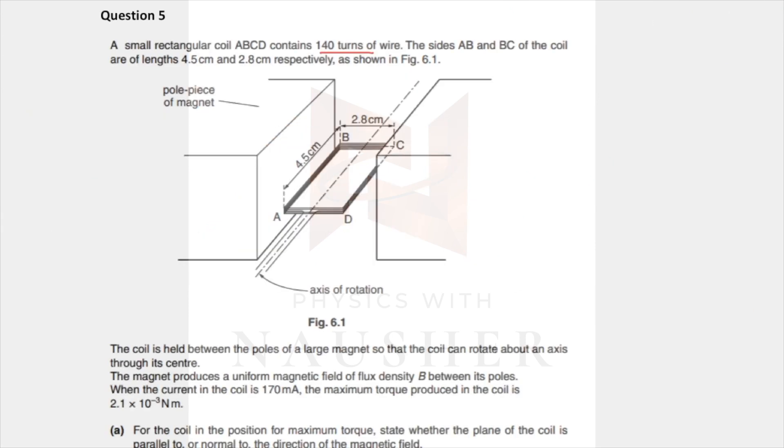I want you to underline: this coil has 140 turns of wire, the sides are of length 4.5 centimeters and 2.8 centimeters. The coil is held between poles of a magnet, the magnet produces uniform flux density. When the current is 170, the maximum torque produced is 2.1 times 10 to minus three.